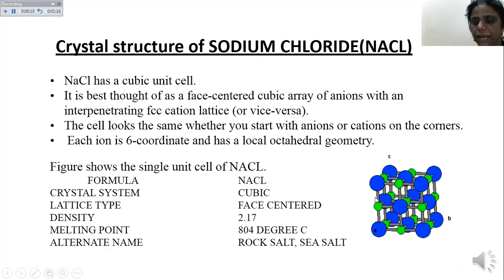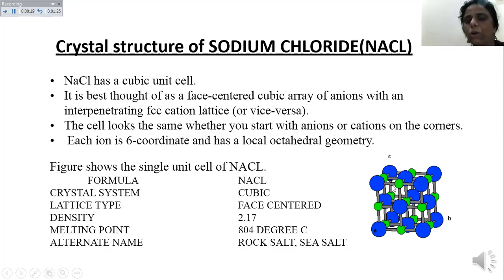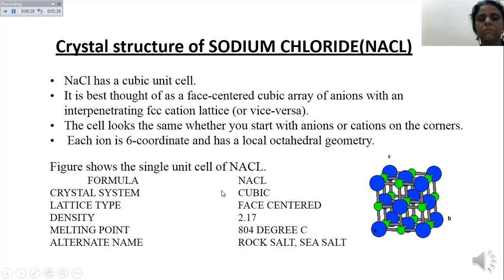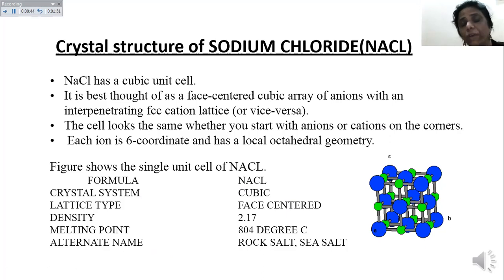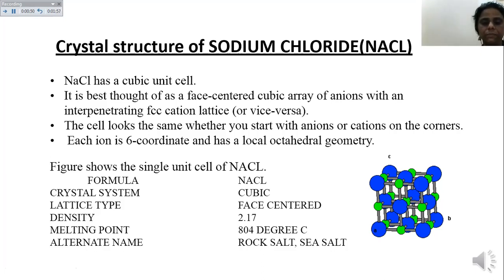NaCl has octahedral geometry. It is a face-centered cubic cell with anions and cations on the corners, with 14 lattice atoms - eight at the corners and six on six faces. Its formula is NaCl, its crystal system is cubic, its lattice type is face-centered. Its density is 2.17 g/cm³, its melting point is 804 degrees centigrade, which is very high because it is a strong, densely packed solid. Other names are rock salt or sea salt.